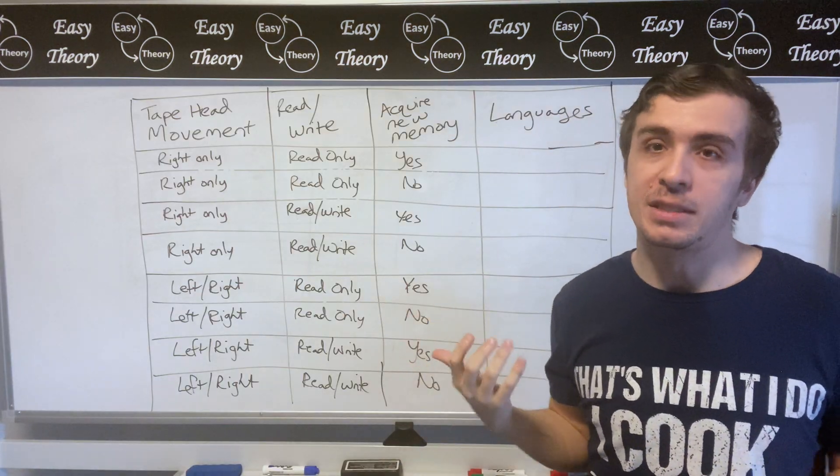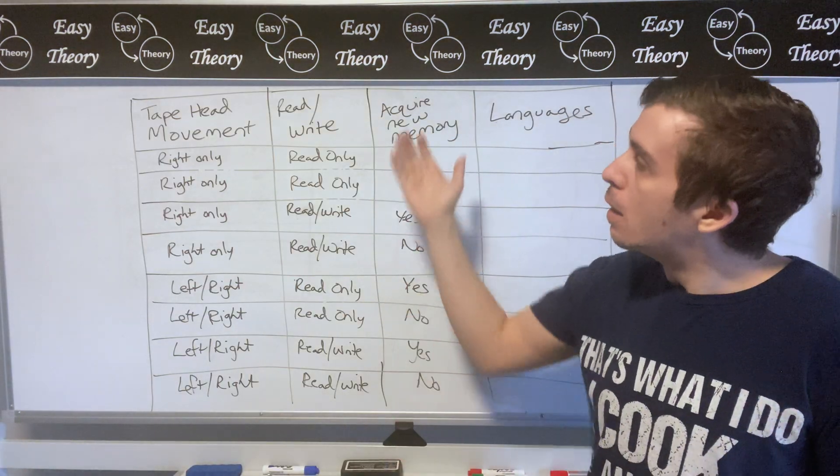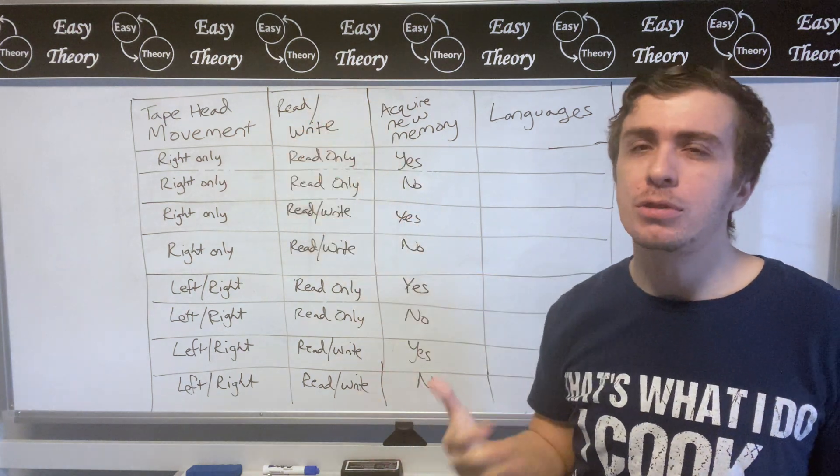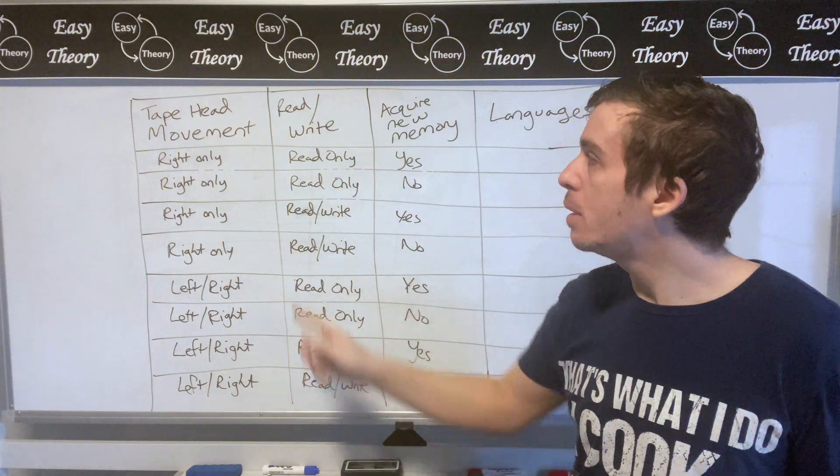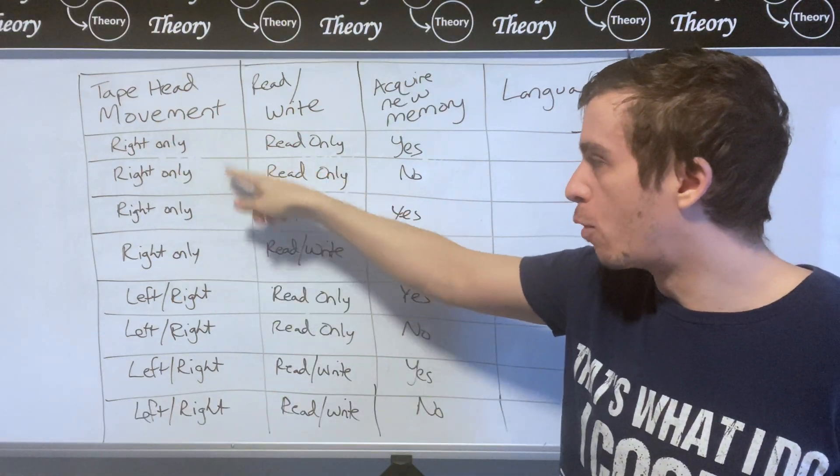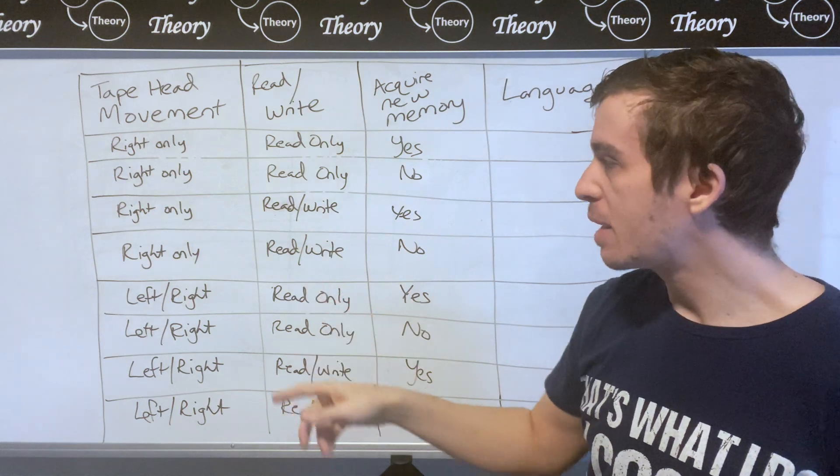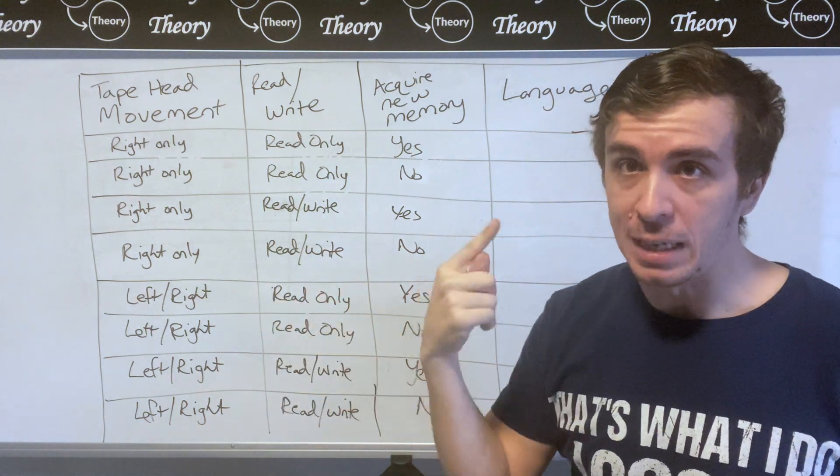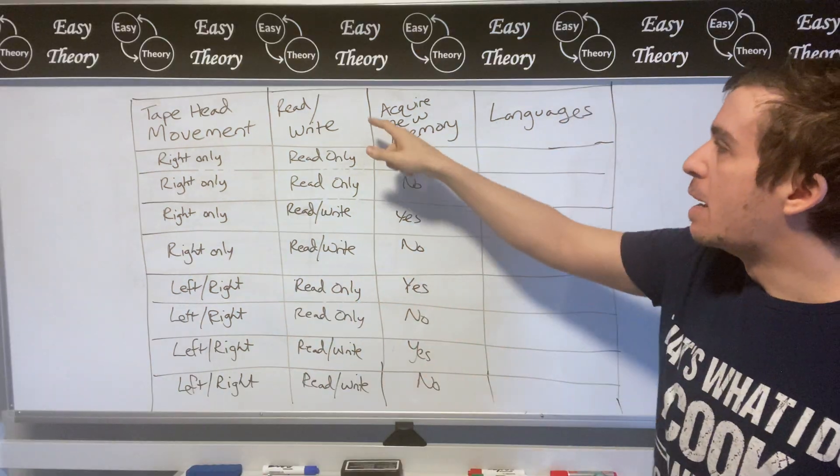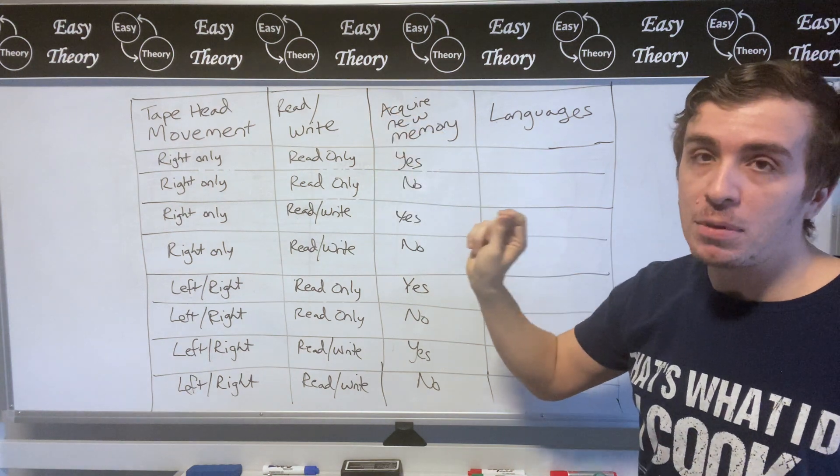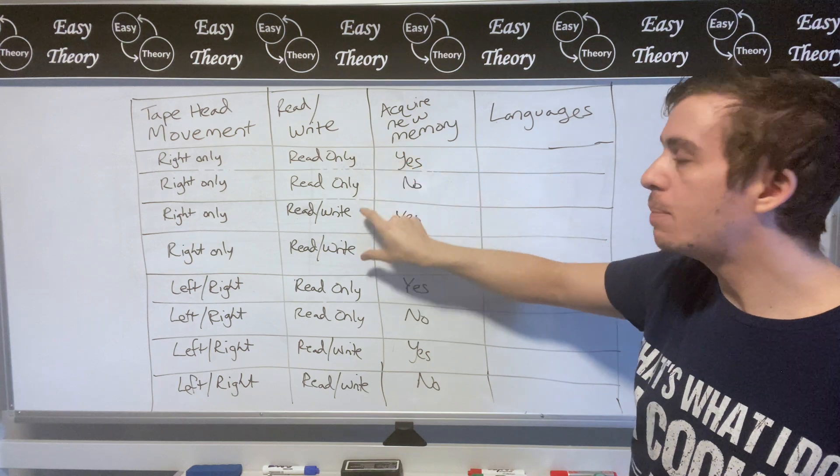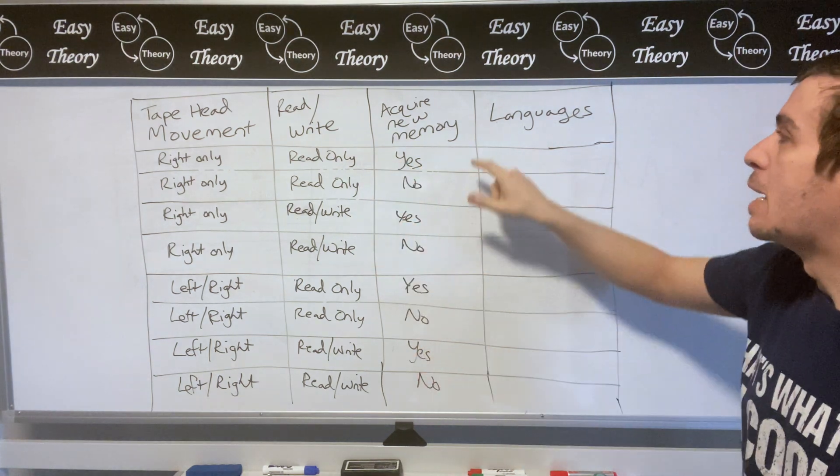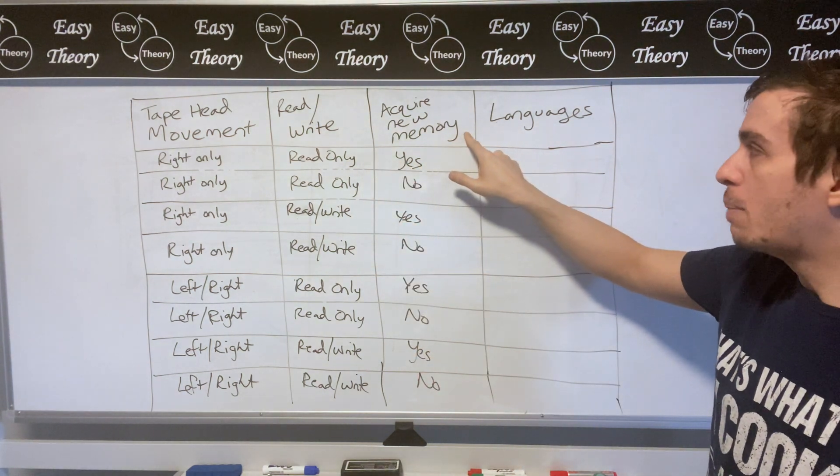So what I've made here is essentially a truth table of what the tape head can do. DFAs don't really have a tape head but the idea of where you can look at the actual input. So I have a bunch of them, four here that are going to be right only and then four that are left and right so you can move left and right. And then capability is about being able to read and write new values into cells. So I've read only for some of them and read write for others, and the ability to acquire new memory.